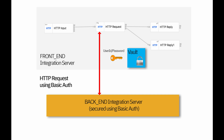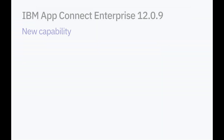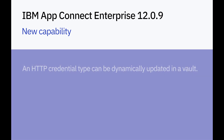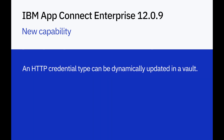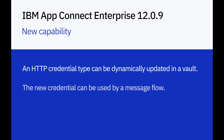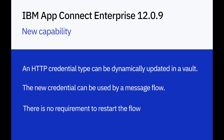The backend web service is secured using BASIC-AUTH. ACE version 12.0.9 provides new capability where an HTTP credential type can be dynamically updated in a vault, and the new credential is used by the message flow without needing a restart of the flow or the integration server.